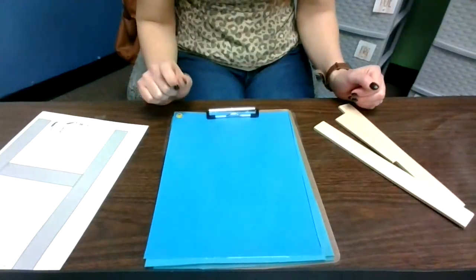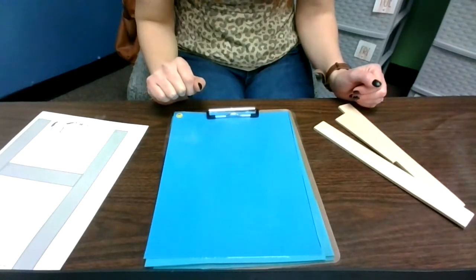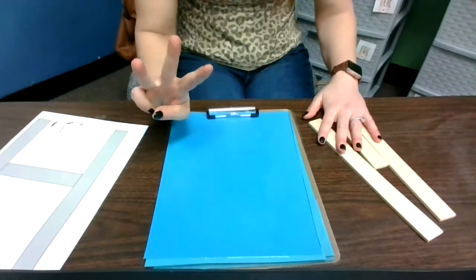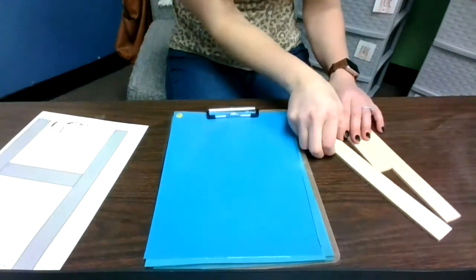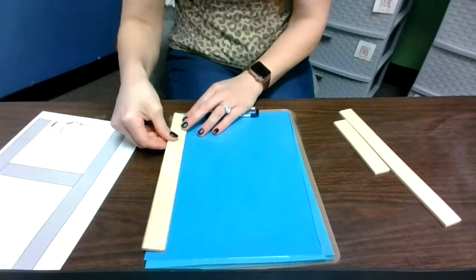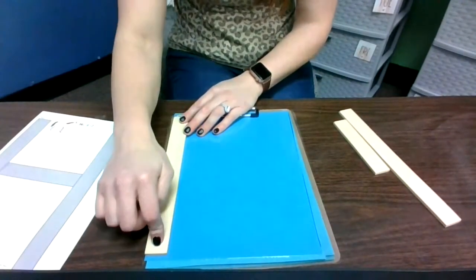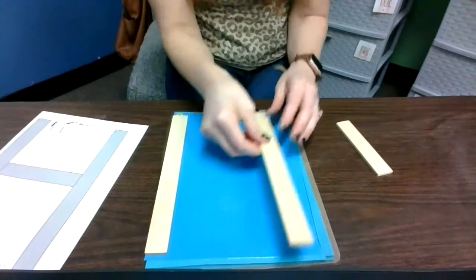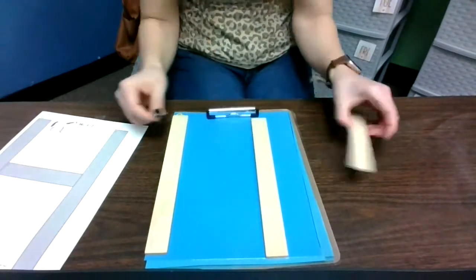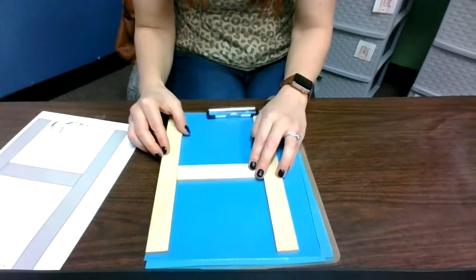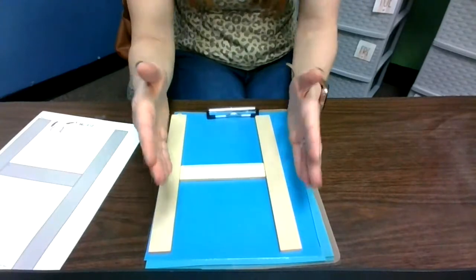And you are going to do it one more time because we always do our wood pieces three times. Again, we start at the top at the smiley. Big line straight down, big line straight down, little line across. It's nice and straight like the train tracks.